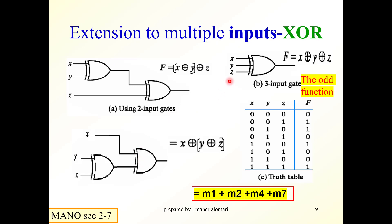Since the two circuits are equivalent, we can implement a three-input exclusive OR gate. The output is equal to X XOR Y XOR Z. The truth table for these equivalent circuits shows outputs at minterms 1, 2, 4, and 7.